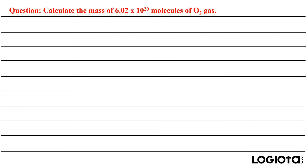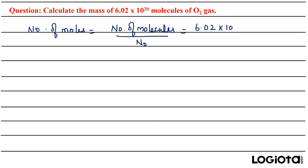We will first start with the calculation of number of moles. The number of moles equals number of molecules divided by Avogadro's number: 6.02 × 10²⁰ divided by 6.02 × 10²³, which gives an answer of 10⁻³. These are the number of moles.